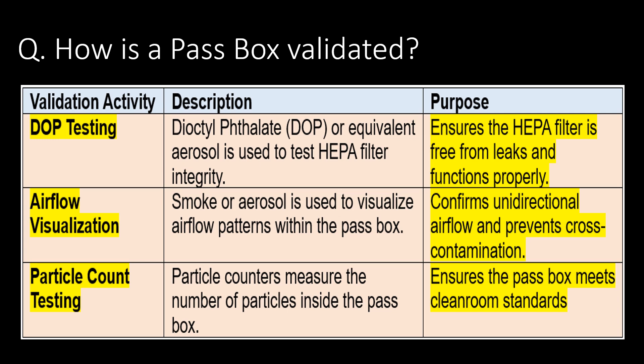Very important question: how is a pass box validated? DOP testing is an important test during pass box validation. DOP stands for dioctyl phthalate, and this test is done to ensure the HEPA filter is free from leaks and functions properly. Second test: airflow visualization, done to confirm unidirectional airflow and prevent contamination. Third test: particle count testing, done to ensure the pass box meets clean room standards.